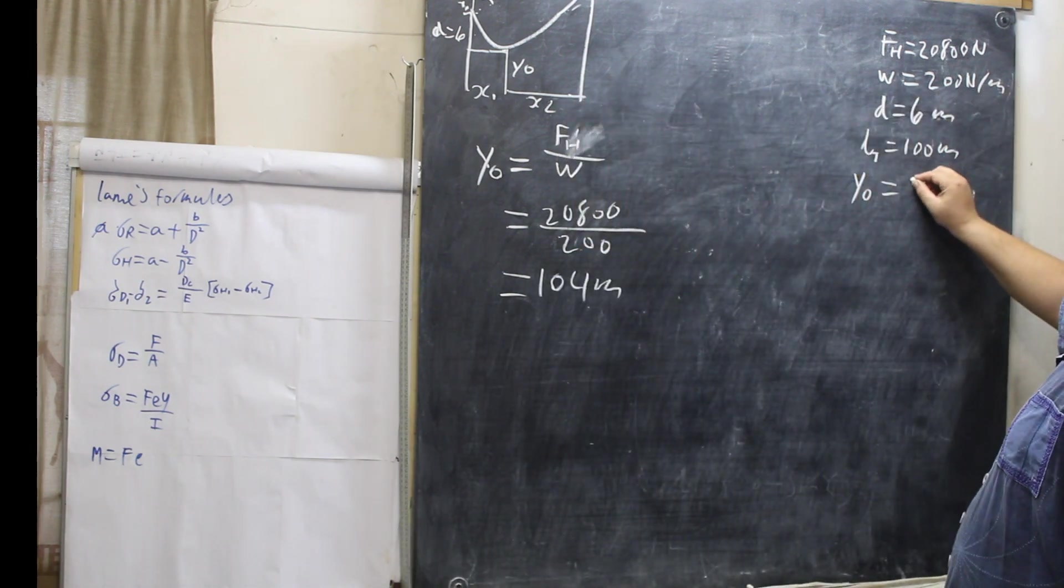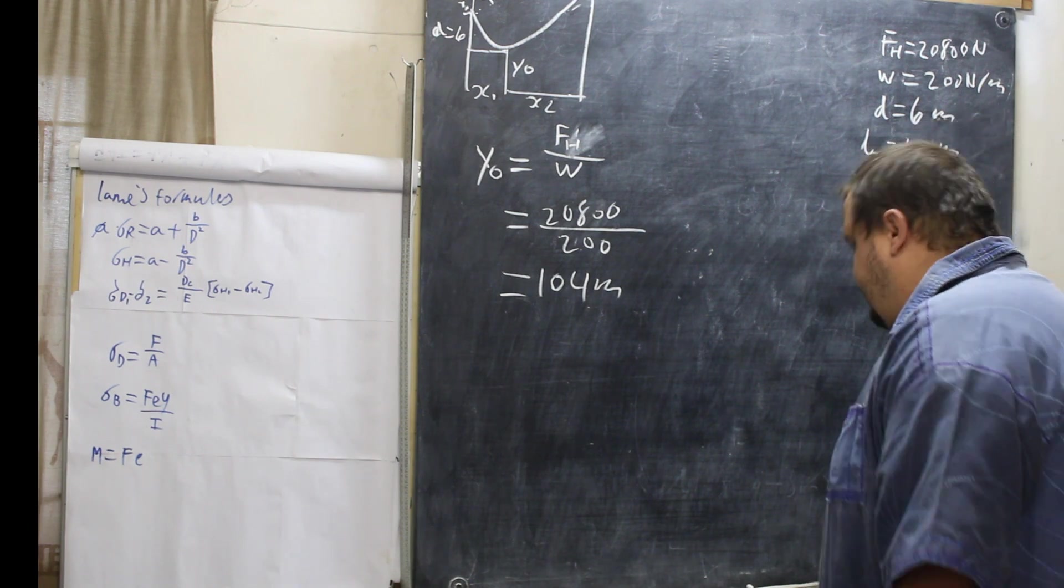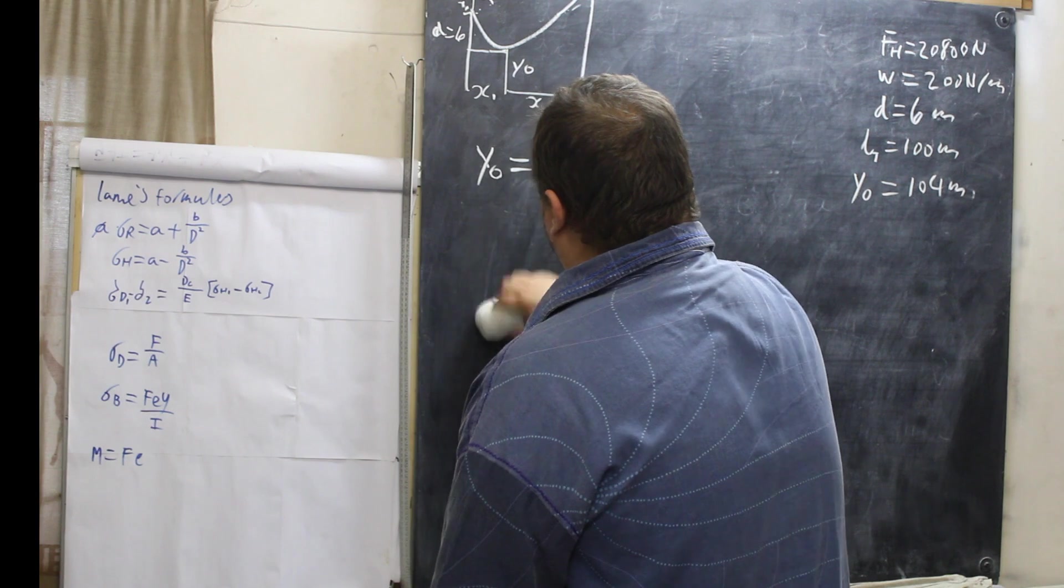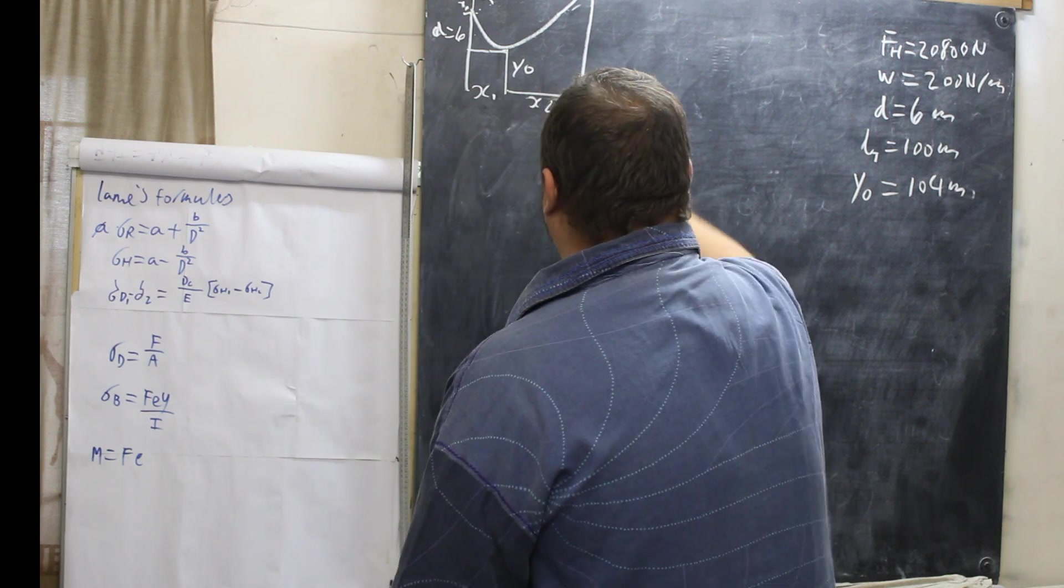F sub H equals 2800. W is equal to 200, newtons per meter. D equals 6 meters. L total is 100 meters. That is the length of the whole cable. And we have everything they have given us. So, to get Y0, because we will need it.